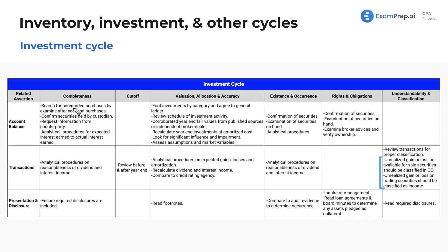For completeness, we're going to search for unrecorded purchases by examining after year-end purchases — making sure that if we purchased something after year-end, it's not unrecorded. Confirm securities held by a custodian. Now, if you have a 401k, if you have stocks, you're not physically holding that stock. It's not in your possession, unless you have a piece of paper or some system where you can hold them.